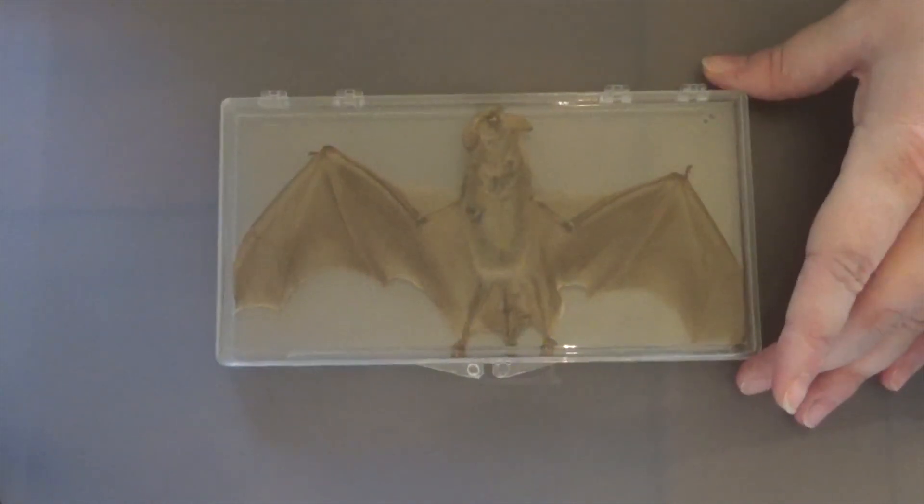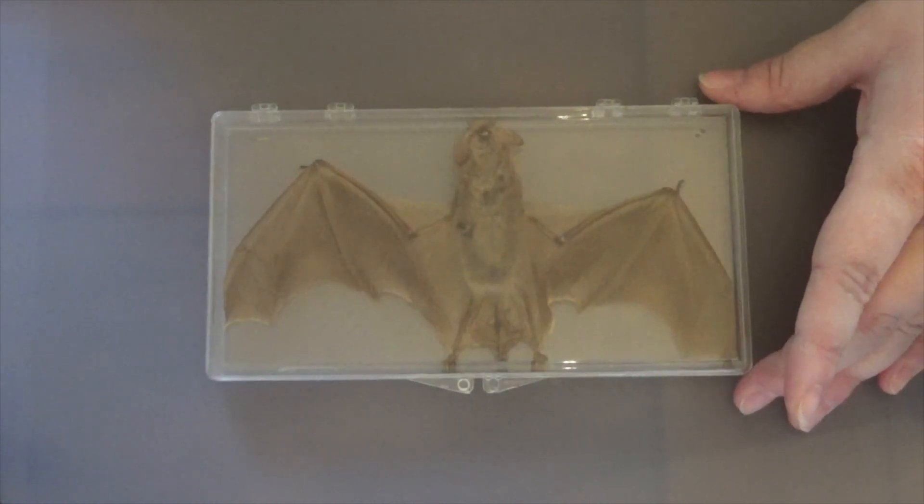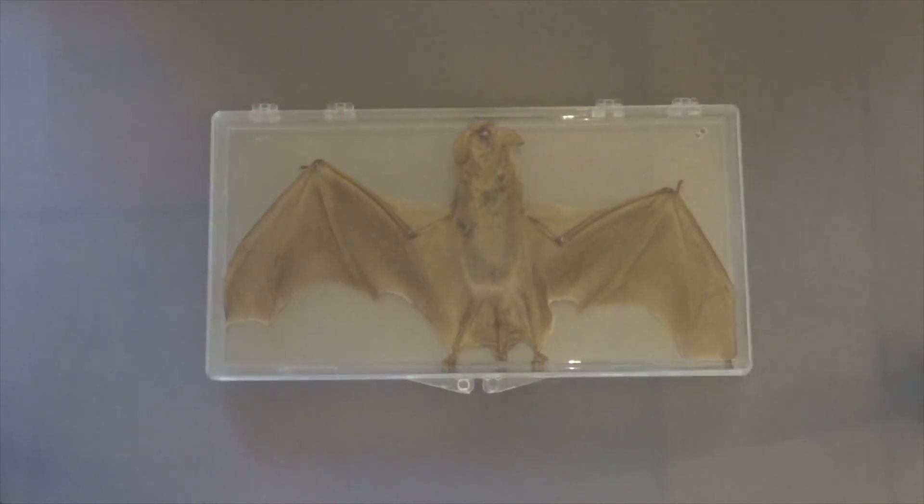So the bat, a lot of bats drink nectar from flowers. And when they're drinking the nectar, they get pollen on their bodies. And then when they fly from that flower to get more nectar at another flower,